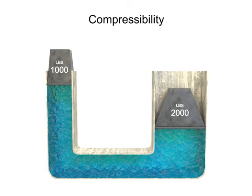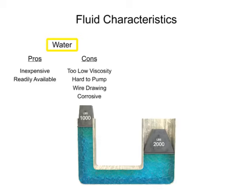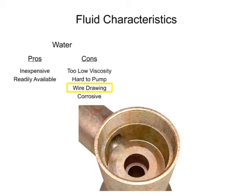Years ago, water was used as the first hydraulic fluid because there was no other liquid available in such large quantities at such a low cost. There are some major drawbacks to using water as a working fluid. Due to its low viscosity, it is difficult to pump. Additionally, the speed at which it flows through the system causes an effect known as wire drawing. Wire drawing occurs when the water flow erodes or scores a pathway in the metal of machinery as it goes around corners and through orifices.